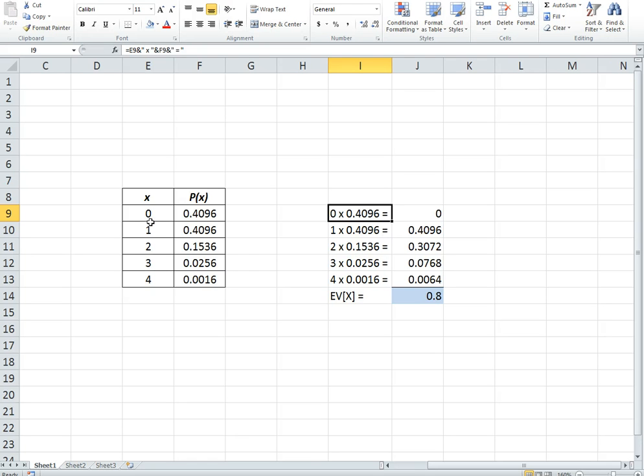And then remember, the expected value ends up being the outcome times its probability plus the outcome times its probability. So here we have listed 0 times 0.4096 equals 0, 1 times 0.4096 is that. And then remember, for expected value, those get added up. So the expected value in this case is 0.8.